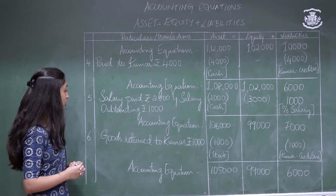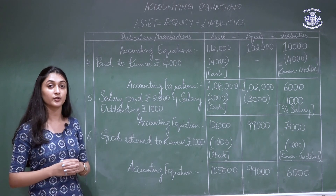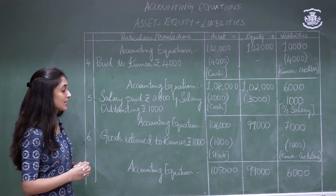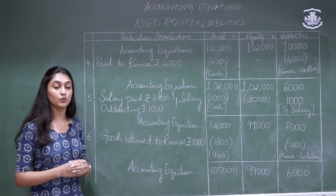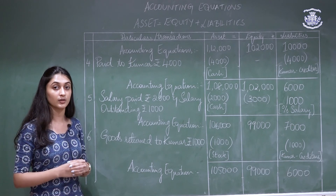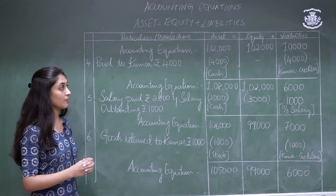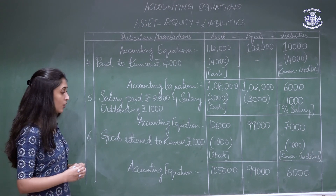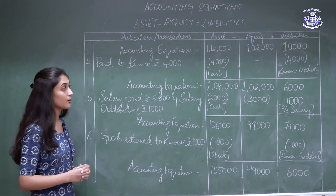Sixth transaction: goods returned to Kumar rupees 1,000. The stock level decreases by 1,000 as goods are returned to the creditor, so we reduce the asset column by 1,000. Since goods are returned to Kumar, who is our creditor, 1,000 is reduced from Kumar's account in the liabilities column. The new accounting equation is: Assets 1,05,000 = Equity 99,000 + Liabilities 6,000.